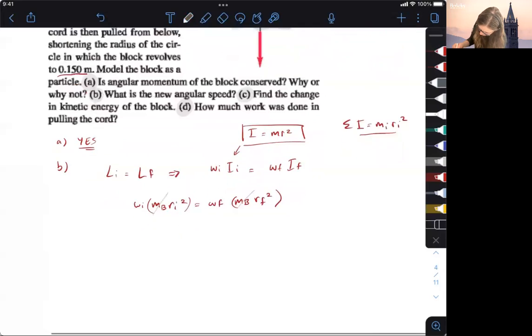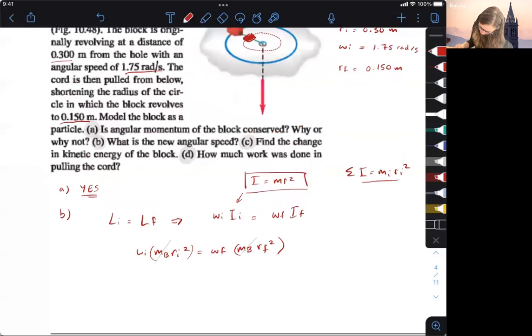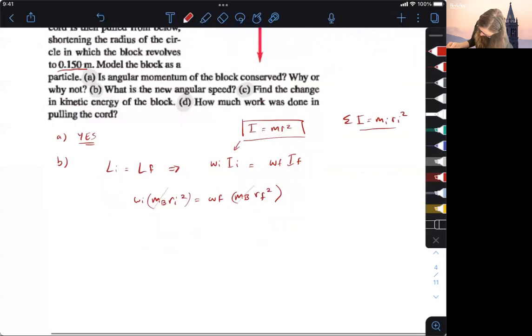And so we're trying to solve for WF. So let's just, we'll algebraically do that first. And then let's figure out what we have to plug in. So we want the final. So our final would be equal to WI times RI squared over RF squared is equal to WF.